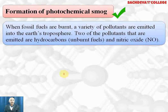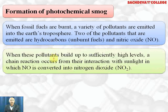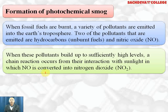Formation of photochemical smog: when fossil fuels are burned, a variety of pollutants are emitted into the earth's atmosphere. Two of the pollutants that are emitted are unburnt hydrocarbons and oxides of nitrogen, that is nitrogen monoxide. When these pollutants build up to sufficiently high levels, a chain reaction occurs from their interaction with sunlight, which converts NO into nitrogen dioxide and generates a lot of free radicals, which are causes of many respiratory diseases.